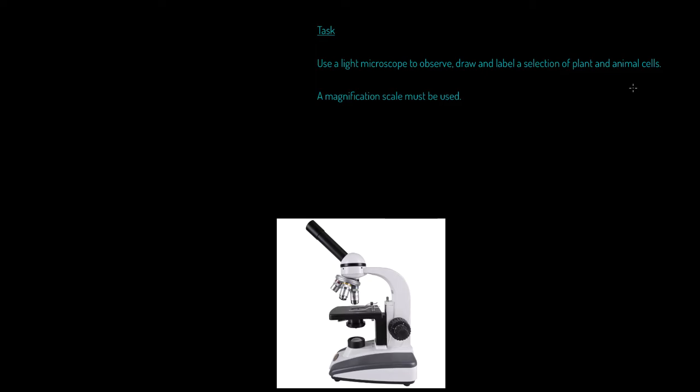And in my opinion, it's one that might seem kind of simple, but it's one I really want you to focus your detail and attention on. You are going to do the following: use a light microscope to observe, draw, and label a selection of plant and animal cells. And you are going to learn how to use a magnification scale in order to do that as accurately as possible.